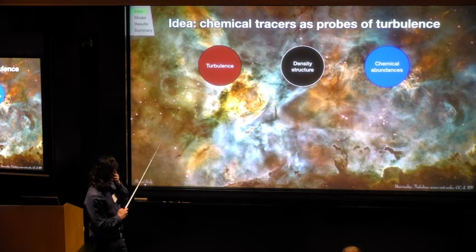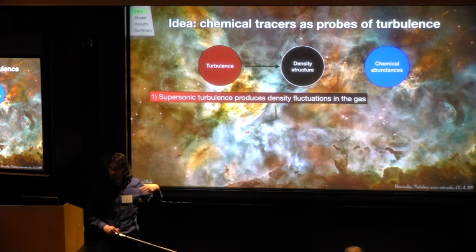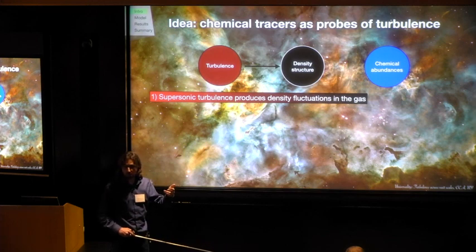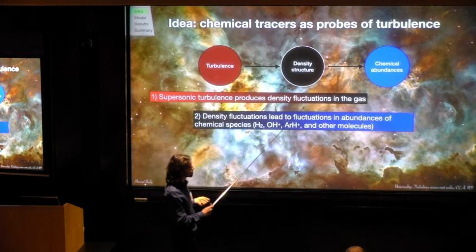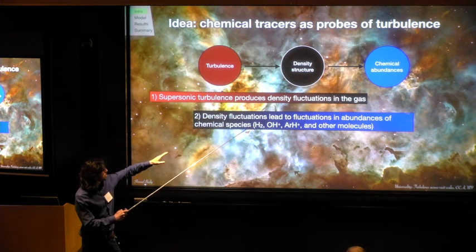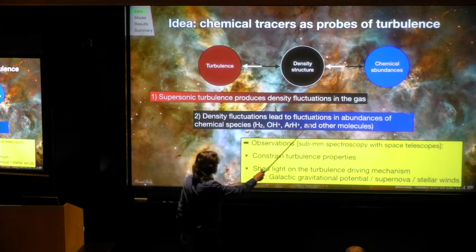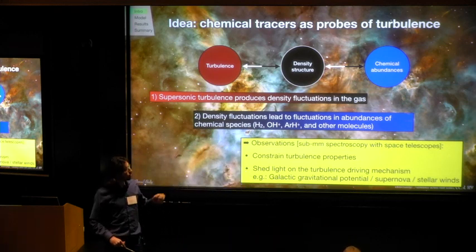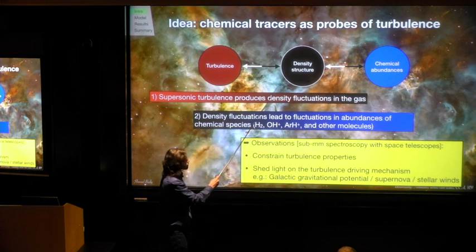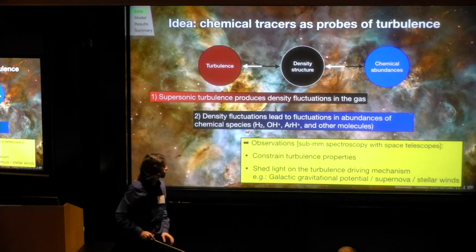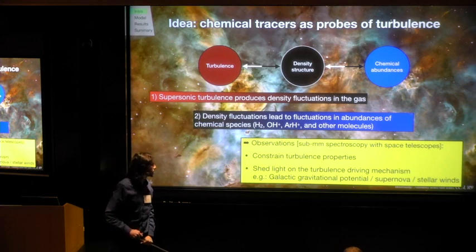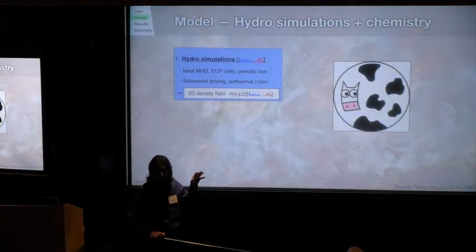So the main goal here is can we somehow better constrain the properties of turbulence with special focus on what drives, what can be the main driver of turbulence in galaxies in the interstellar medium. Is it driven on large scales from the gravitational potential of the galaxy that induces motions, or is it more on smaller scales, what we call feedback from supernova or even outflows and winds from stars? And the idea is as follows. We have the turbulence and the turbulence when supersonic produces density fluctuations because it's compressible turbulence. And now when we have density fluctuations, because chemical reactions are very sensitive to the density, this also produces fluctuations in the abundances of various chemical species - molecules, ions, et cetera. Now these chemicals and the abundances of these things, we can observe chemicals with spectroscopy, with space-based telescopes. So if we observe the chemical abundances, we can reverse the arrows and use the fluctuations in the chemical abundances to tell us something about the density structure and then back to tell us something about the turbulence.